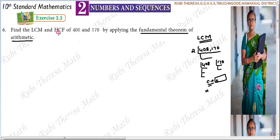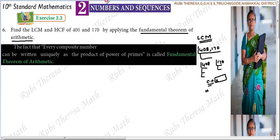If we apply the Fundamental Theorem of Arithmetic — what does it state? Every composite number can be written uniquely as the product of power of primes. So now we can find the prime factorization.